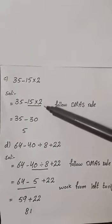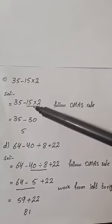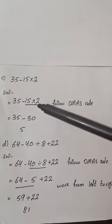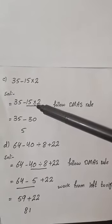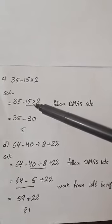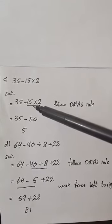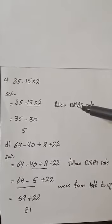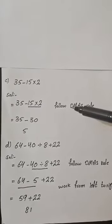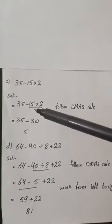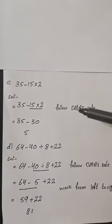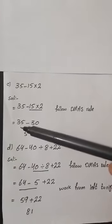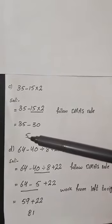Look at the next question. We have two operations, but these belong to two different families — minus belongs to one family and multiply belongs to another family. This means we have a mixture of families, so we follow the DMAS rule. According to DMAS, we first solve multiplication: 15 multiplied by 2 equals 30. Then 35 minus 30 equals 5.